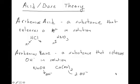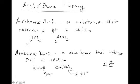Arrhenius theory is the most basic definition of acids and bases — it covers a lot, but not all. You need to know the definitions and be able to pick out an Arrhenius acid or base from a list. For acids, look for a leading hydrogen: H plus the rest of the compound. For Arrhenius bases, look for an OH at the end of a compound that can be released in water.